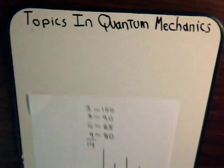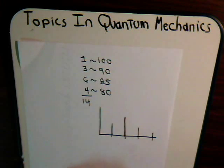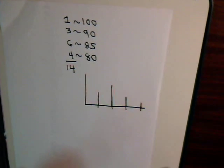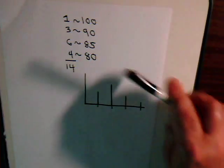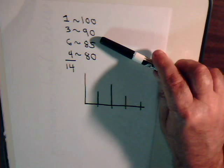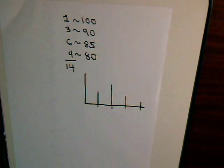Suppose for example that we had a class taking a test and this was the distribution of the test scores. Four people scored an 80, six got 85, three had 90, and one of them had 100.